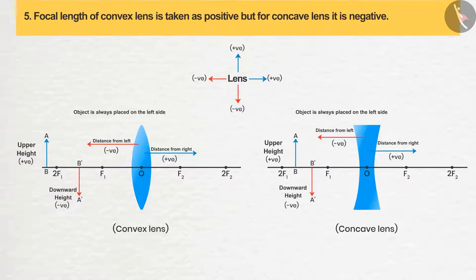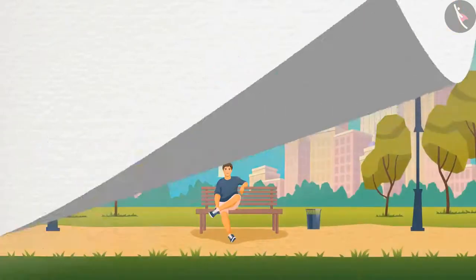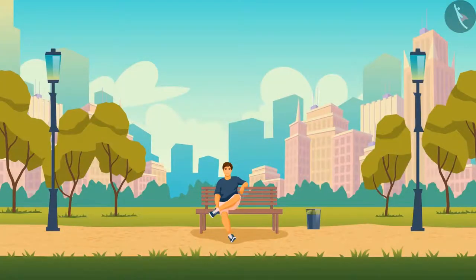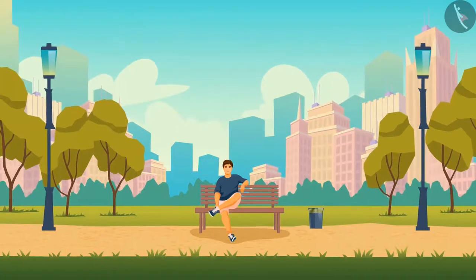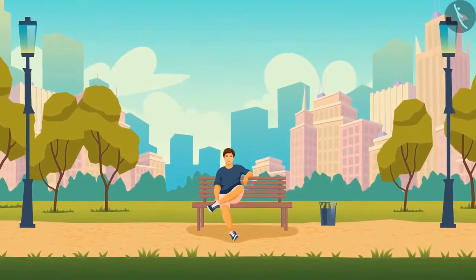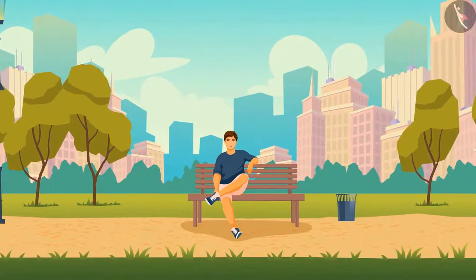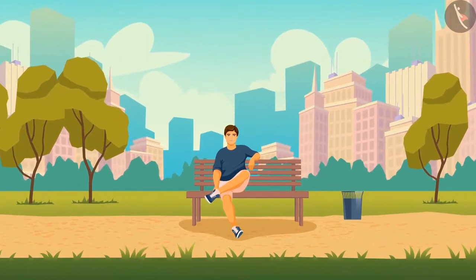Sign convention 5: The focal length of a convex lens is taken as positive, but for a concave lens, it is negative. In the case of a mirror, it was clear that in a convex mirror the focus is on the right side, so it is taken as positive, and in the concave mirror it is on the left side, so it is negative.